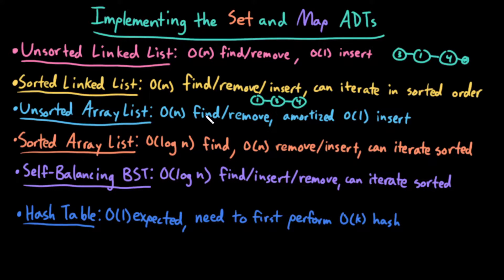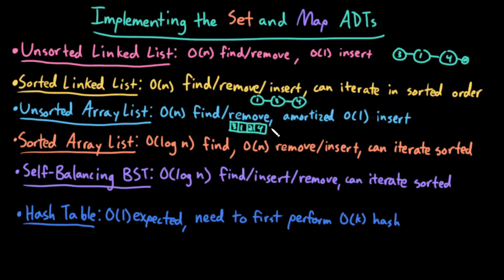Next, let's talk about the unsorted array list. With an unsorted array list, finding an element is big O of N — I have to theoretically look over all N elements to find a given element. Removing an element is also big O of N: I have to potentially look over big O of N elements to find what I'm removing, and I might also have to move over big O of N other elements to clear out the empty space. However, it has an amortized constant time insertion — I can just add to the end in constant time. Even though I might have to resize, which is a big O of N operation, if you amortize this over all of the insertions, it's big O of one amortized.